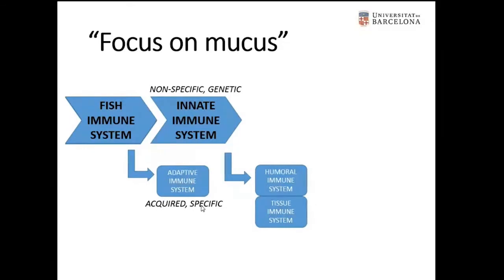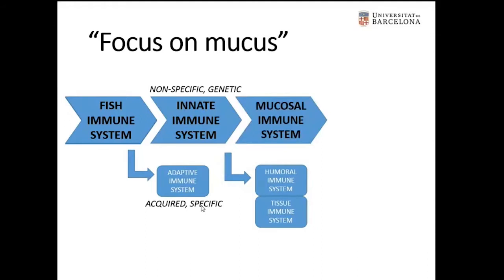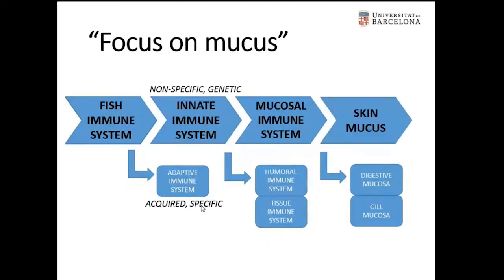The innate or non-specific immunity is the first line of defense to deal with different pathogens. This defensive system can be divided into three main components: the mucosal immunity, the humoral immunity, and the tissue or cellular immune system. There are three main mucosal systems in the fish body: the skin mucosa, the gill mucosa, and the mucosa of the digestive tract.